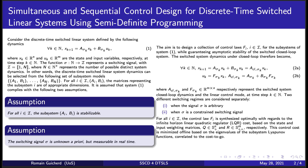Switched systems are useful to model certain changes in dynamics, such as an actuator loss or a sensor loss. In our research, we considered two key assumptions. First, all the subsystems Ai, Bi are stabilisable. Second, the switching signal Sigma, although unknown a priori, is measurable in real-time. The aim is to design a collection of control laws Fi for all the subsystems of System 1.